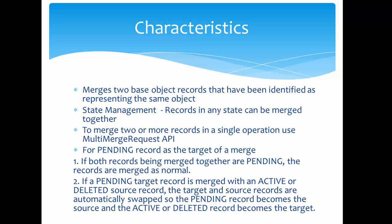Let's look at the characteristics of the Merge API. It is used to merge two base object records that have been identified as representing the same object. Not necessarily those that have been matched and are ready for merge — we can also merge individual records which have a consolidation indicator, so without running tokenization or the match job, we can merge those records as well.